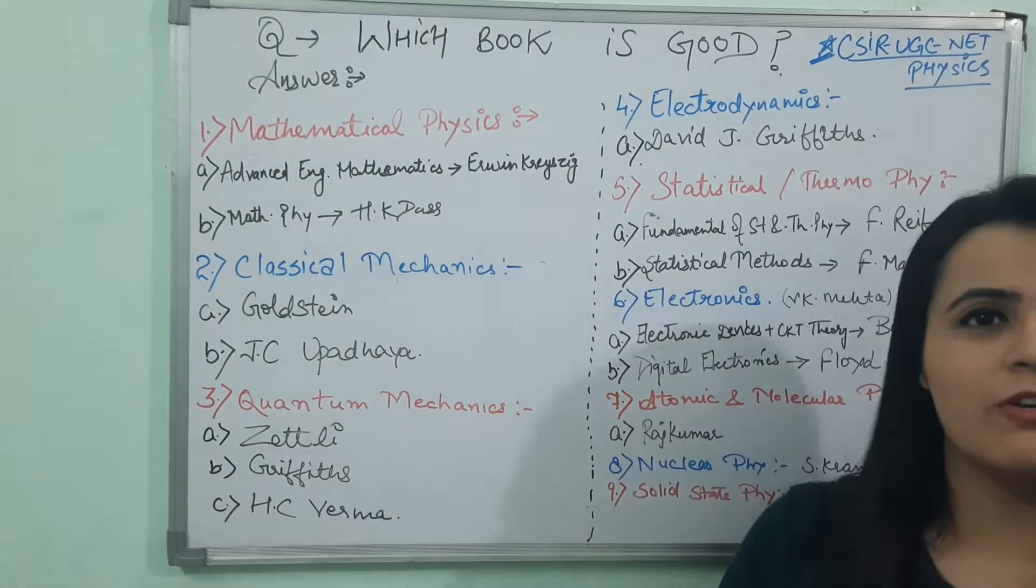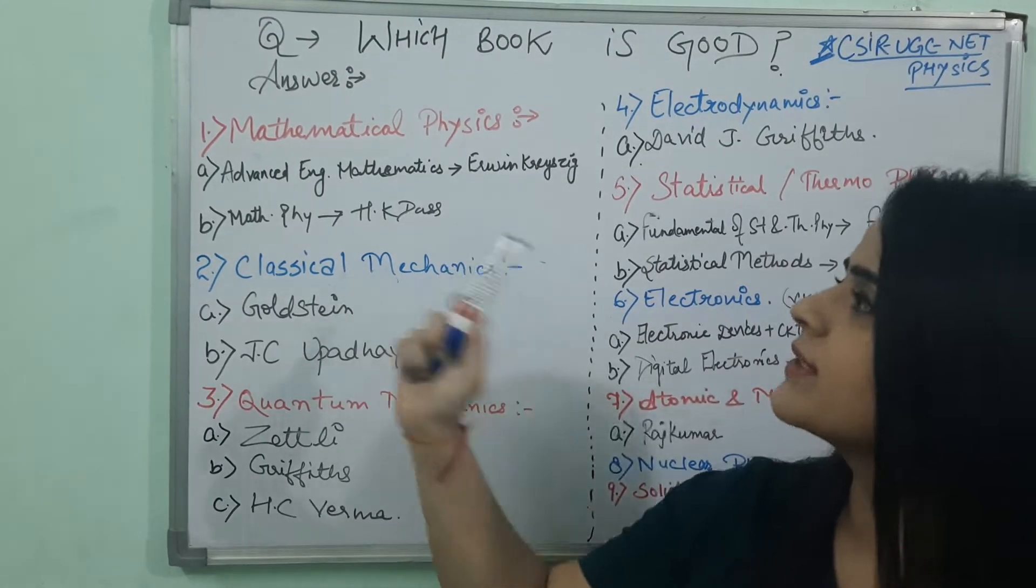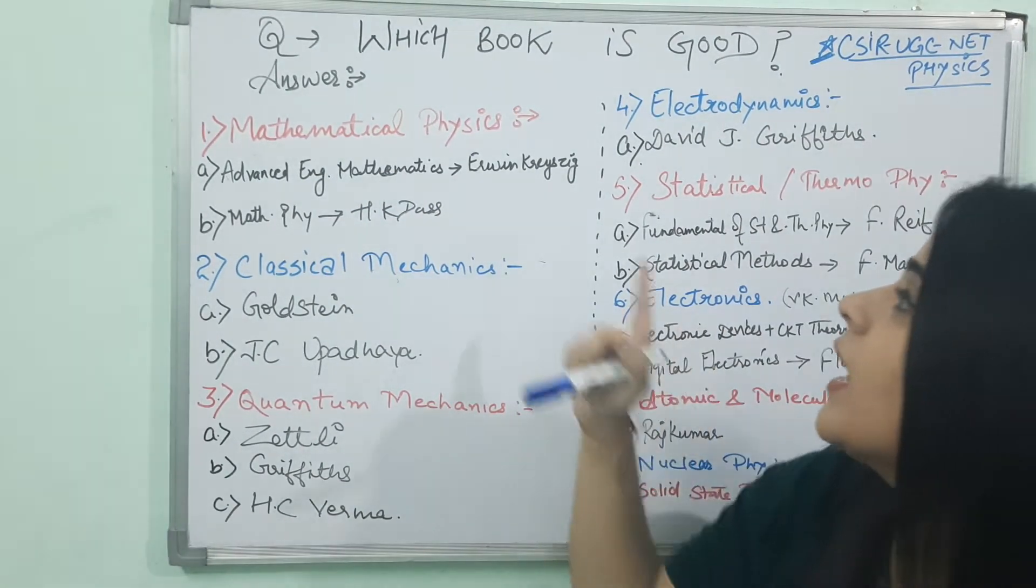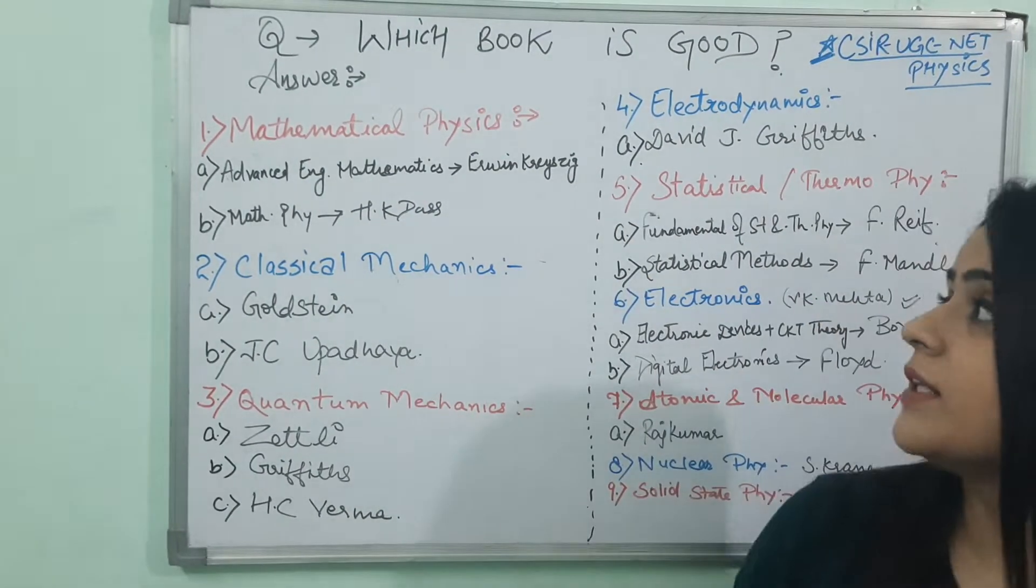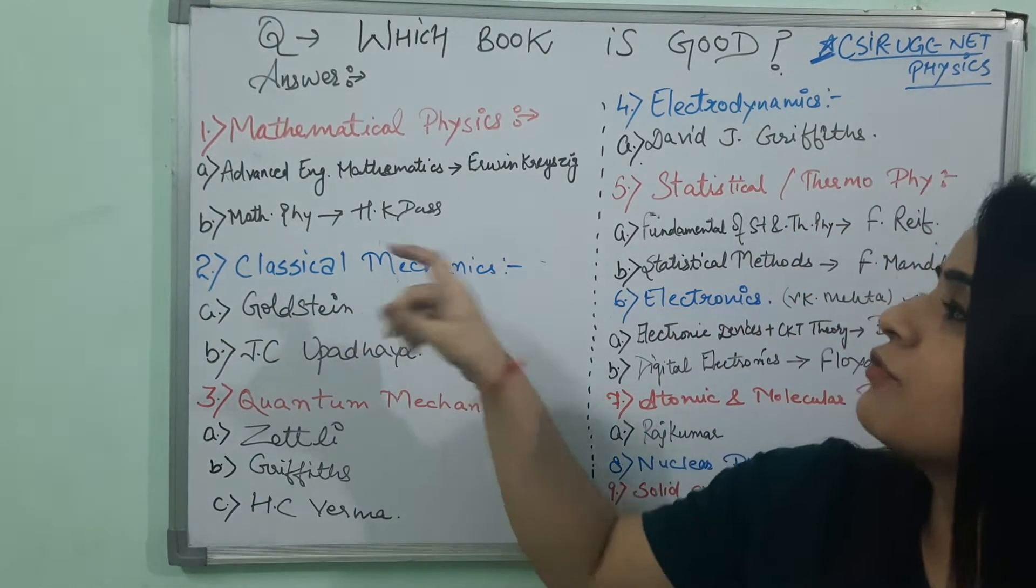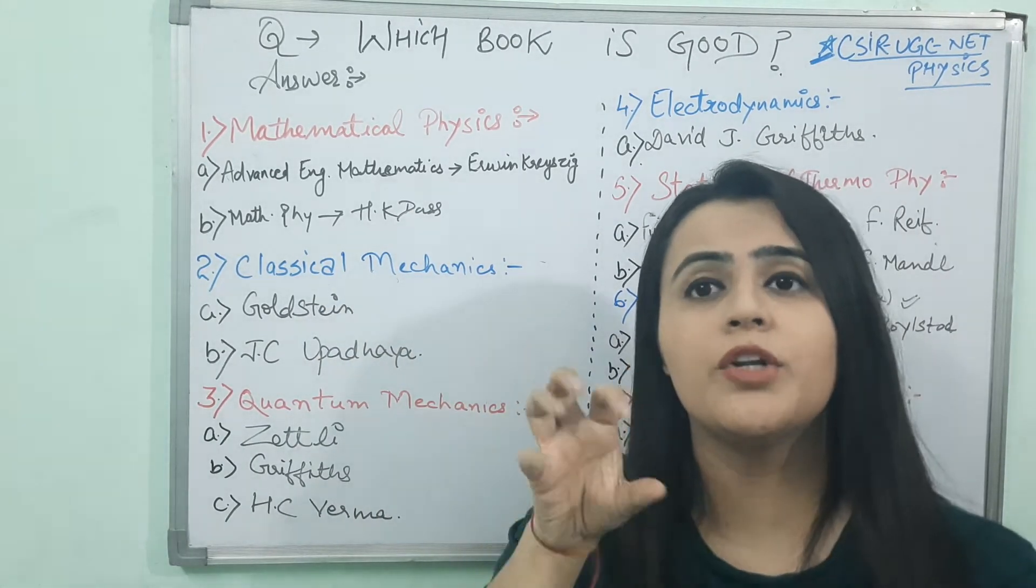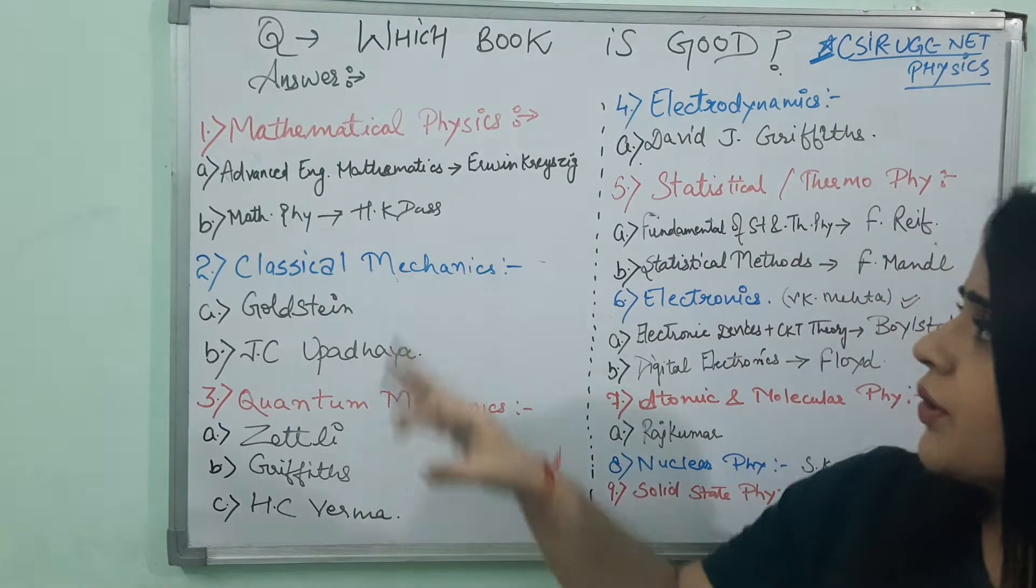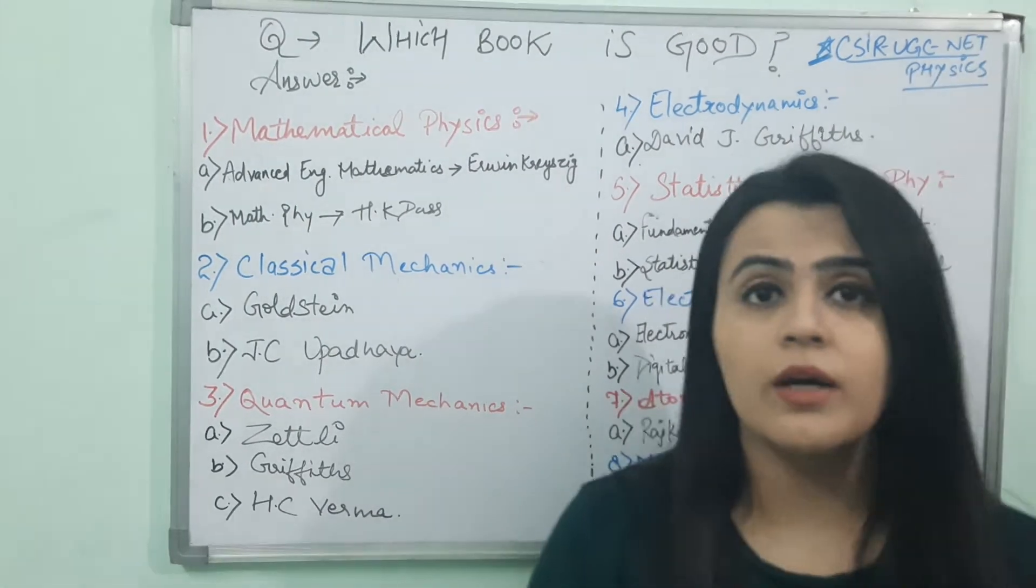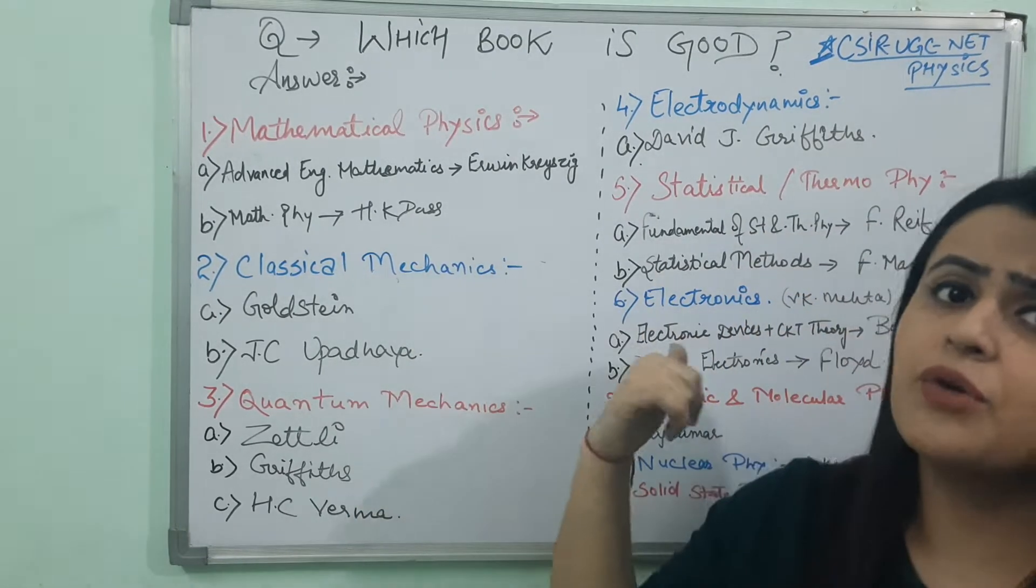So I am starting with Mathematical Physics. For Mathematical Physics, I just want to refer you two books which are very good. Like Advanced Engineering Mathematics by Arvin Kreyszig. That is a very important book. And the second one is Mathematical Physics by HK Das. In this book you can get a very good quality of examples, good quality of questions. So you can prefer these two books for Mathematical Physics. Otherwise you have your own notes of coaching institutes also, but according to me these books are the basic root.